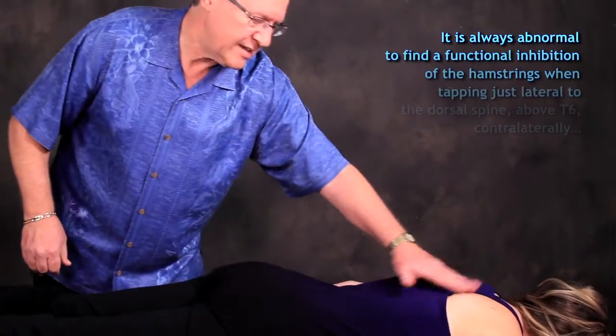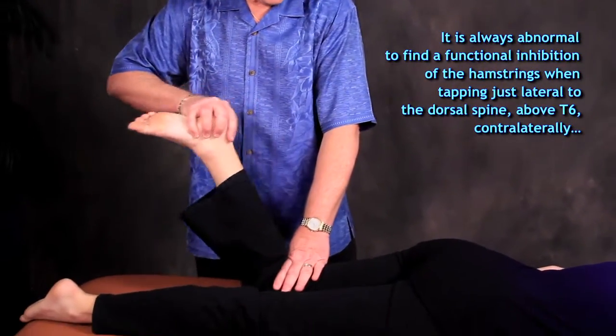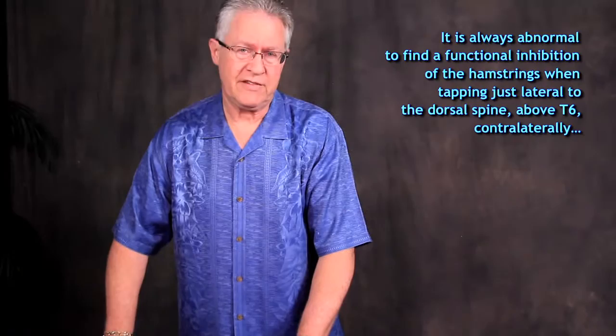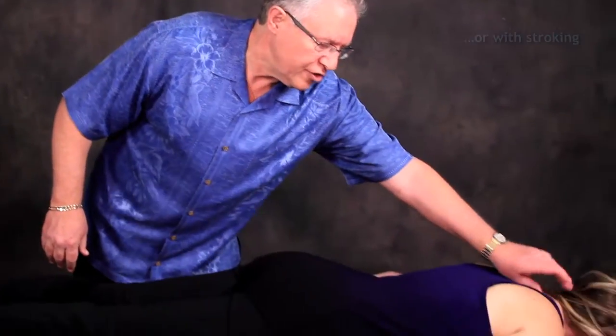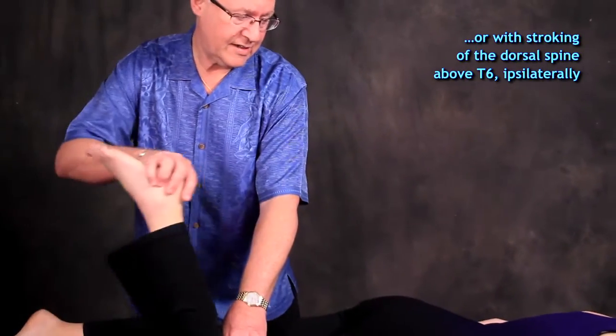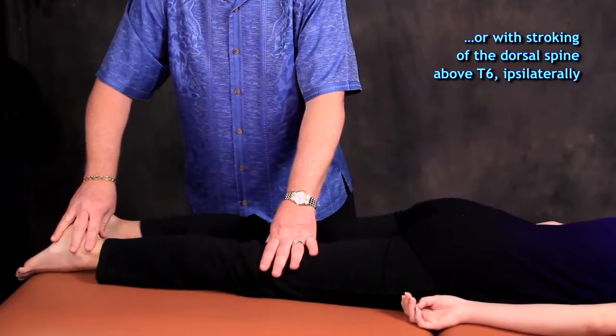It's not unusual to see tapping on the right side of the dorsal spine and a functional inhibition of the hamstrings contralaterally, or stroking of the dorsal spine on the right side and a functional inhibition of the hamstrings ipsilaterally. Both of those would be considered abnormal.